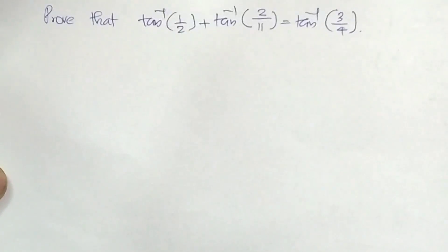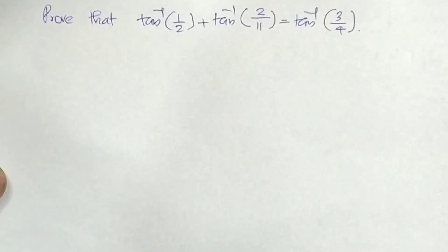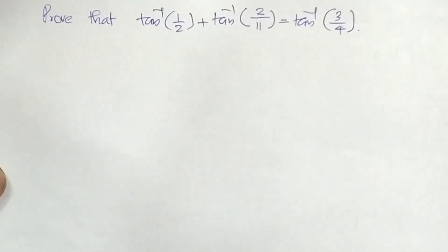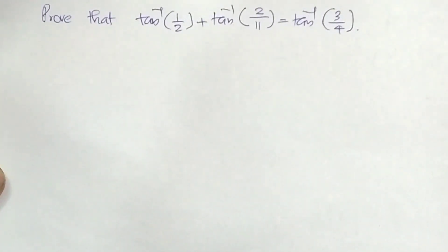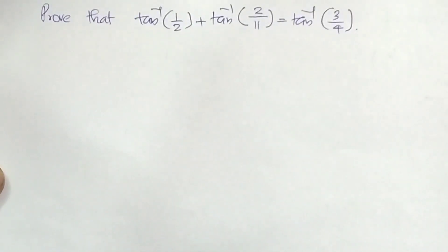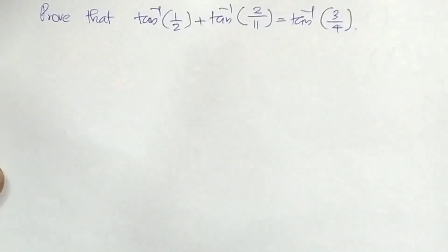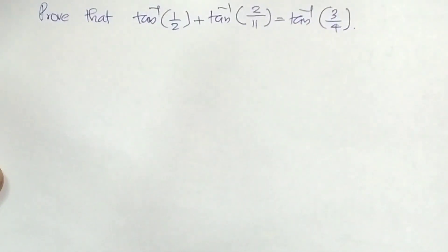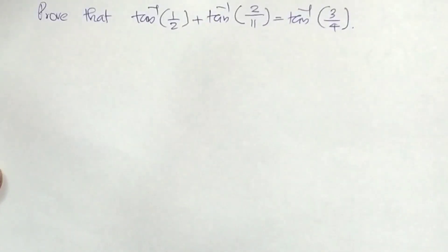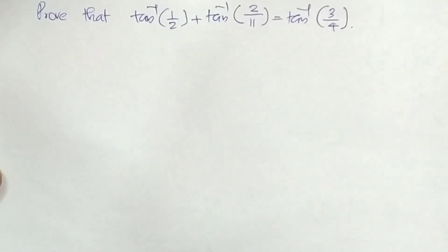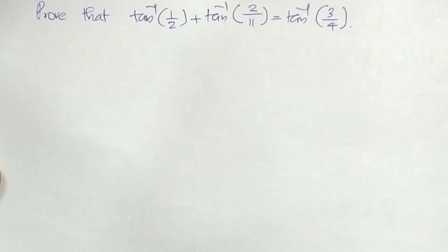This is from the Inverse Trigonometric Functions chapter. Three types of questions are covered: the first is 'prove that' type, the second is 'write in simplest form or simplify', and the third is 'solve and find the value of x'.